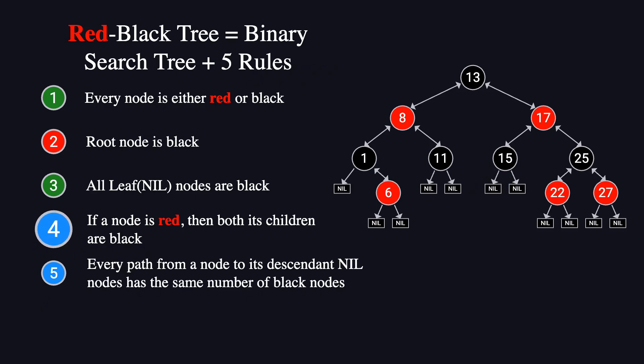Rule four states that a red node cannot have a red child. There cannot be two consecutive red nodes. This rule might be violated if the newly inserted red node's parent is also red, creating what's called a red-red conflict. For example,